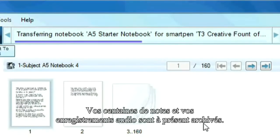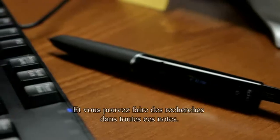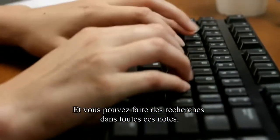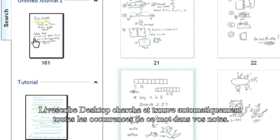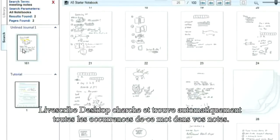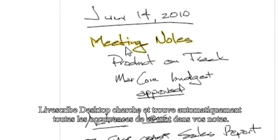Now you have an archive of your handwritten notes and audio, and all those notes are searchable. To search, type in any word. Livescribe Desktop automatically searches and finds every instance where that word appears in your writing.